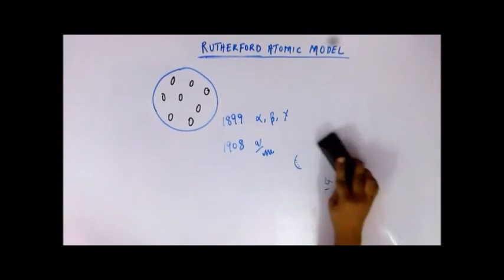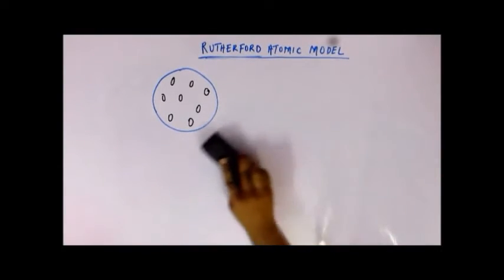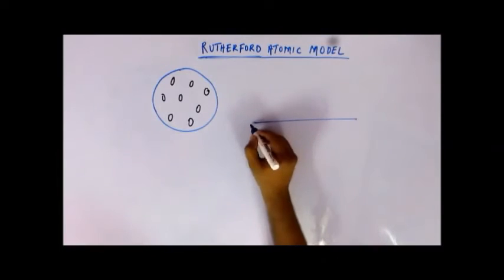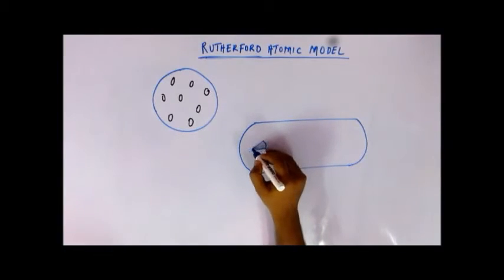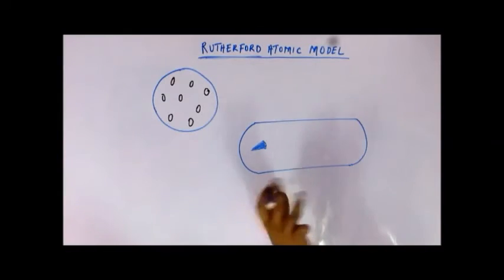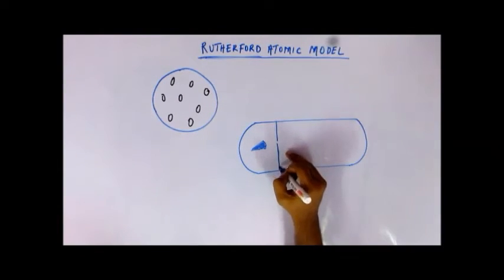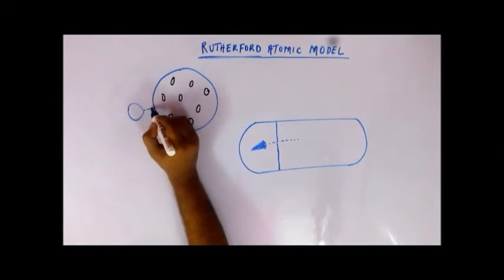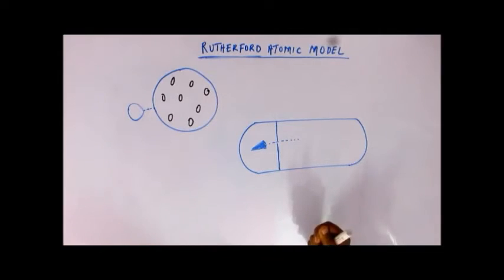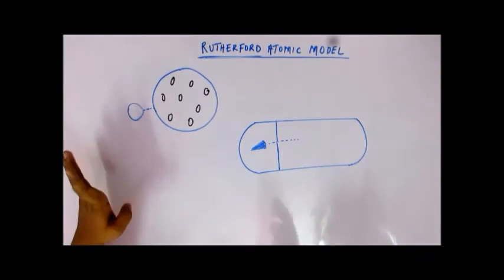Rutherford devised an experimental setup to count the alpha particles. He took a gas tube with a radioactive source that emits alpha particles. A slit streamlined the alpha particles so they traveled in a straight line to the other side, where the space was filled with gas. When an alpha particle collided with a gas molecule, the collision was very energetic — alpha particles are very high-energy particles.